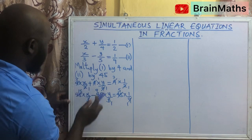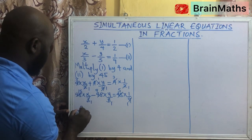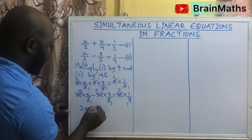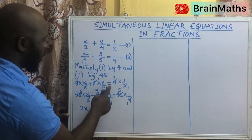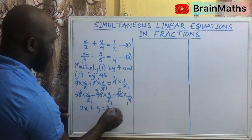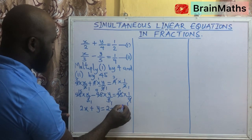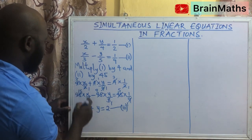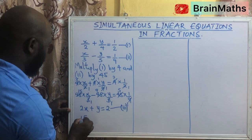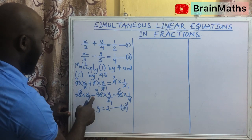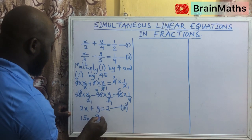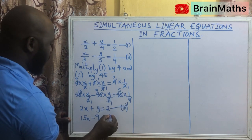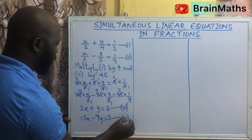...we are going to have 2 times x, which is 2x, plus 1 times y, that gives us y, and then 2 times 1 equals 2. So this is going to serve as our new equation 3. And when you come to the second one, we have 15 times x, that is 15x, minus 9 times y, that is 9y, equals 5 times 1, which is 5. So this will be our new equation 4.